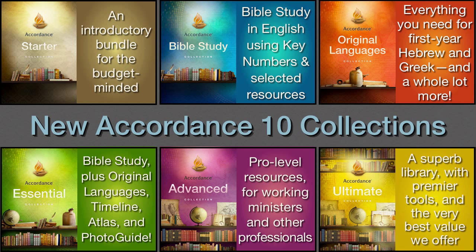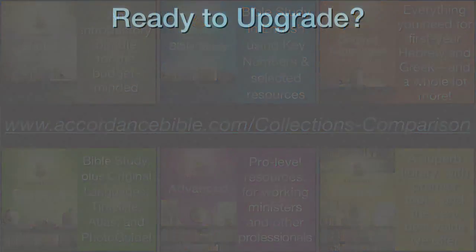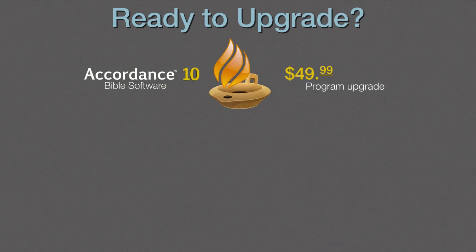For a convenient comparative chart and pricing, use this webpage. The Accordance 10 Bible Software Program is only $49.99. However, as we just said, it is free to anyone buying any of our new Accordance 10 collections. Check out both possibilities here.